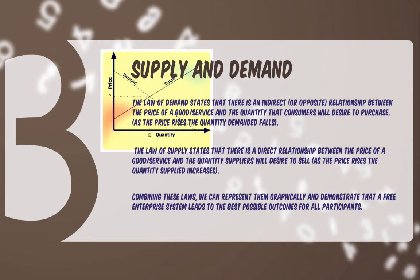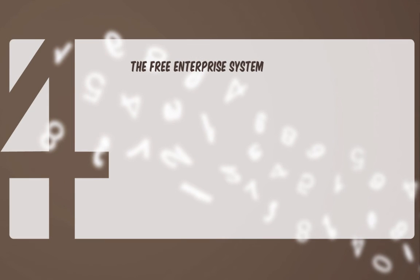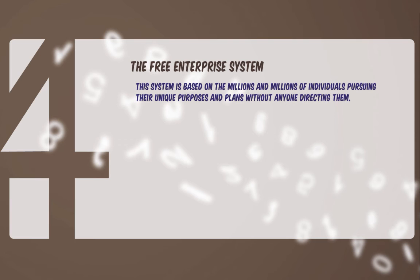In Gus's pie business, the equilibrium price or the market price in a free enterprise system represents the relative value of all the ingredients that go into making pies and the value of Gus's labor and the resources he uses to bake pies. Given these features of exchange and trade, the price system, and the interaction of supply and demand, the free enterprise system flourishes. This system is based on the millions and millions of individuals pursuing their unique purposes and plans, acting individually without anyone directing them.